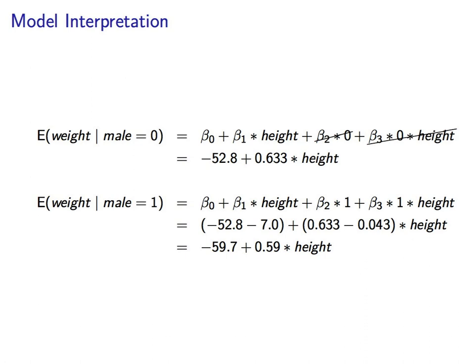Because male is 1, we substitute 1 in for male here. Beta 2 and beta 3 are added to beta 0 and beta 1. So these terms can be combined. Beta 2 and beta 0 can be combined here. Beta 3 and beta 1 are both multiplied by height. And we can combine those here. And we are left with negative 59.7 plus 0.59 times height. So that's the equation for our line for the expected weight of males.